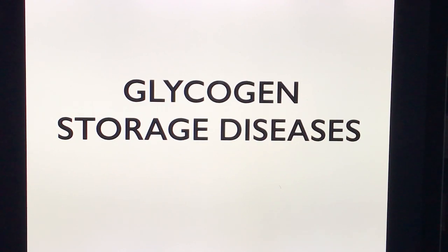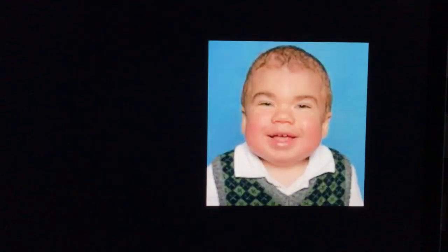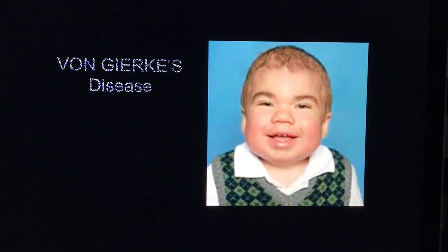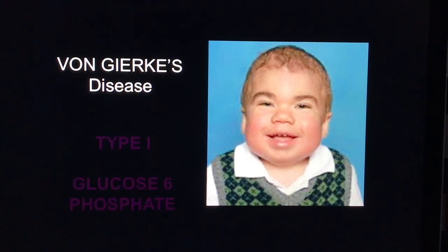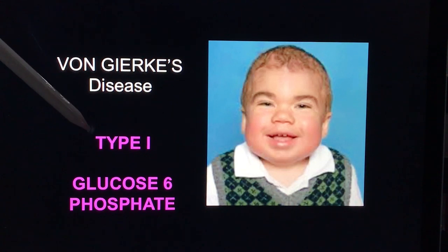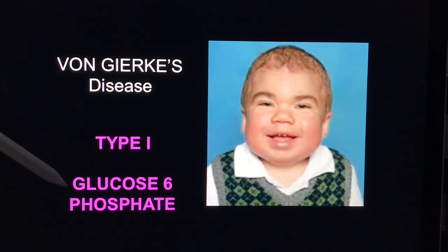So let's finish the last part, which is actually glycogen storage diseases. Let's start off with the first, which is known as von Gierke's disease. Von Gierke's is also known as type 1 glycogen storage disease, and it arises from a deficiency of glucose-6-phosphatase.